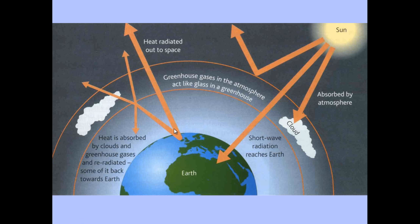With no greenhouse gases like carbon dioxide or methane, all of the infrared radiation would leave and go out into space. Whereas what actually happens, a bit like a greenhouse, is that some of it is reflected back and kept within the Earth's atmosphere, hence raising the temperature.